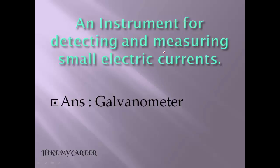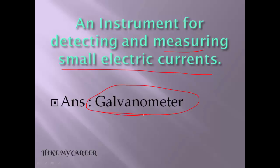Which instrument is used for detecting and measuring small electric currents? The answer is galvanometer. Galvanometer is used for measuring and detecting small electric currents.